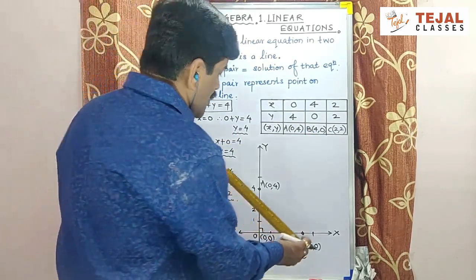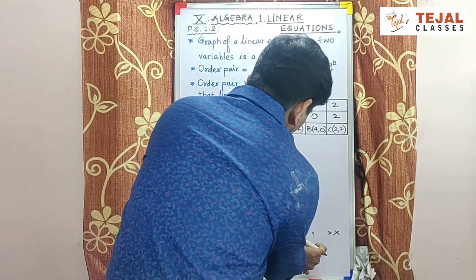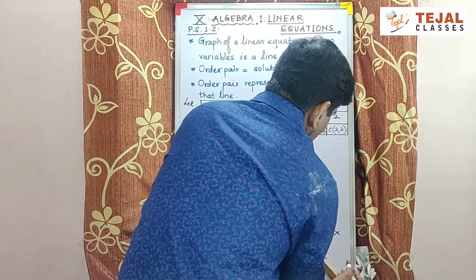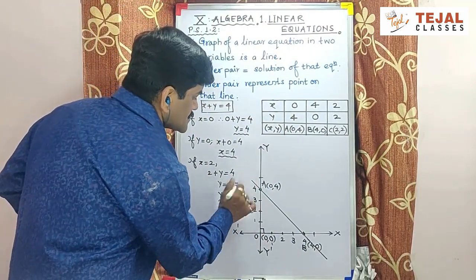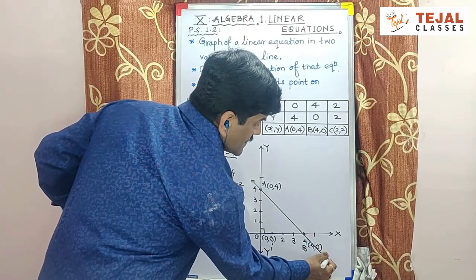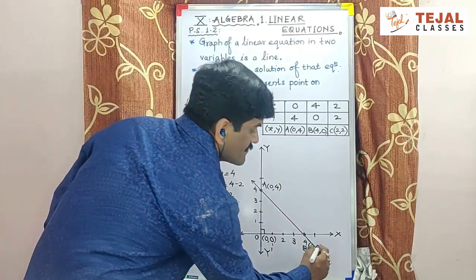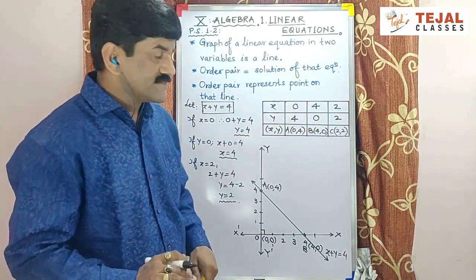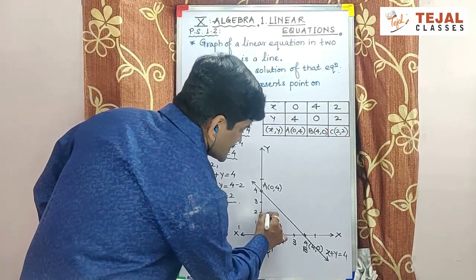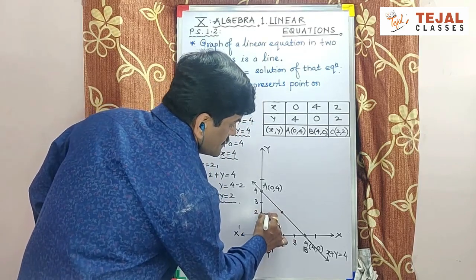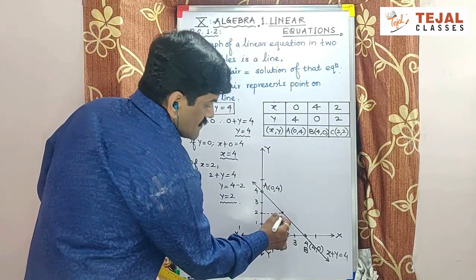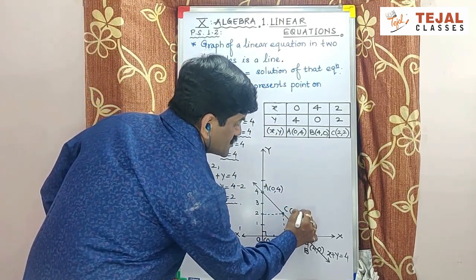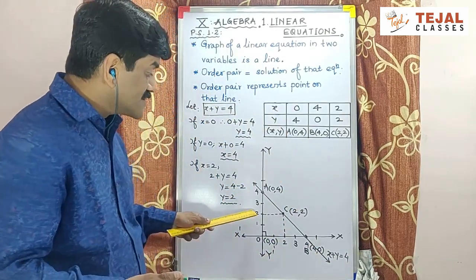अब हम इसे draw करते हैं. When you draw a line through these points, you will get this type of line. You can extend this line further. At any one end, you have to write the equation, which is x plus y equal to 4. 2 points plot हो गए, अब 3rd point बाकी है. Point C (2,2): horizontal distance 2, vertical distance 2 — it lies exactly on the line. मैंने 3 points plot कर दिये — this is called draw the graph of given equation.